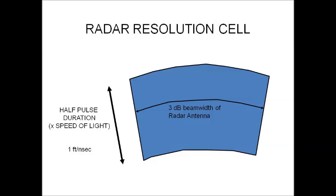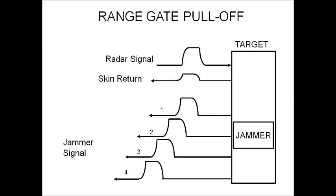This is an example of one of the concepts we cover — the radar resolution cell. This is the area in which a radar cannot tell if there's one target or multiple targets. It's very useful in various electronic warfare concepts, including the use of decoys and various jammer techniques that depend on an understanding of this concept.